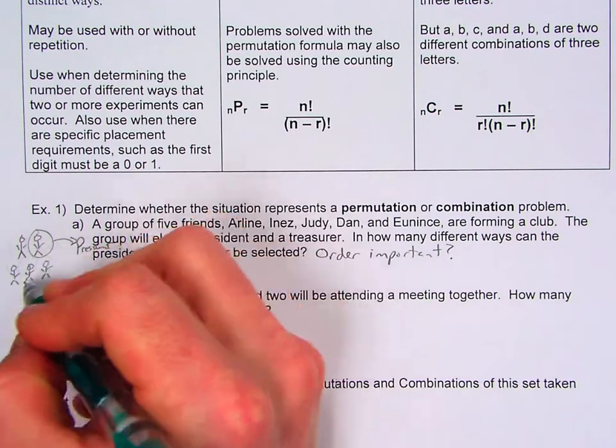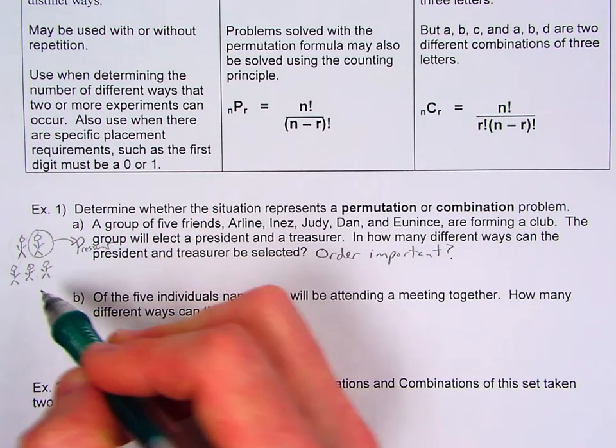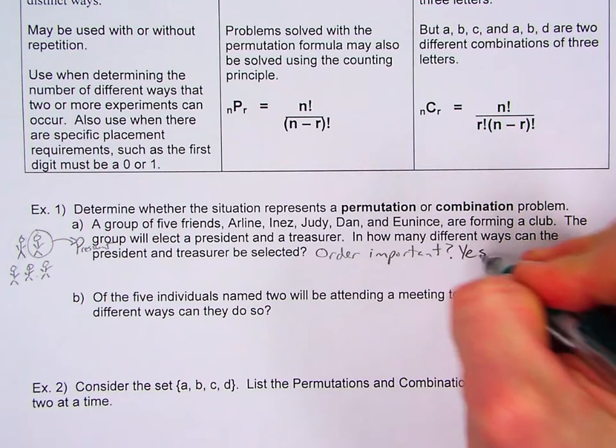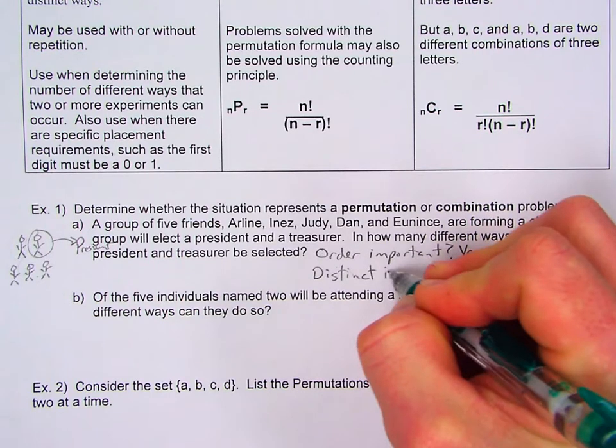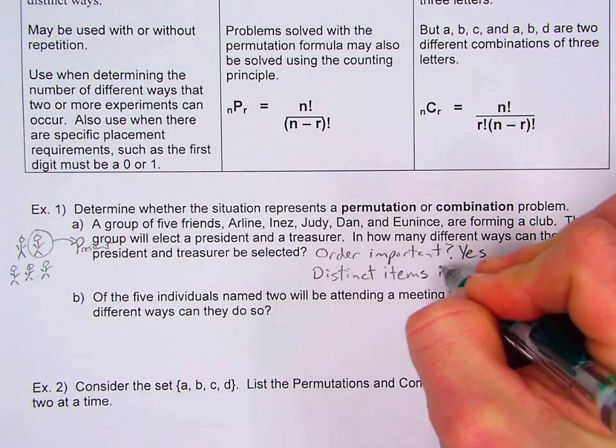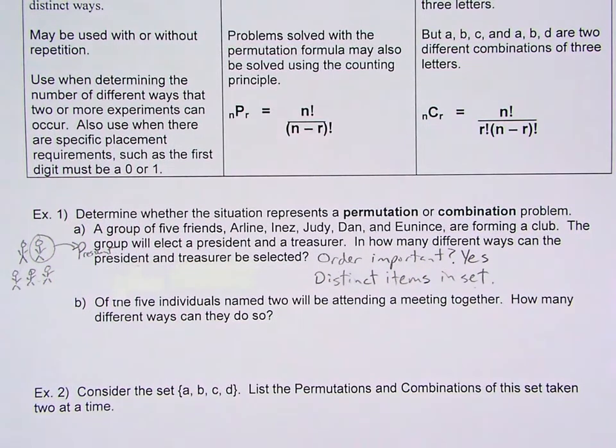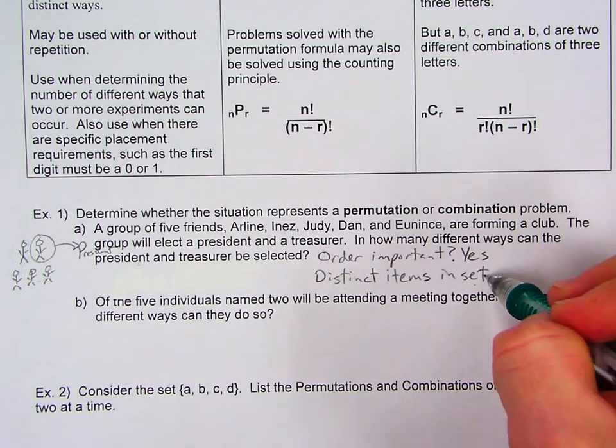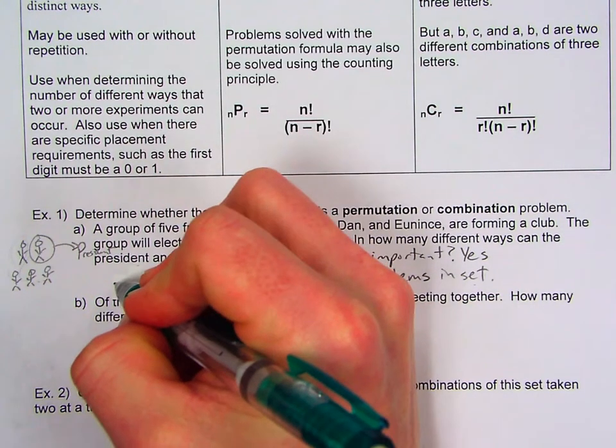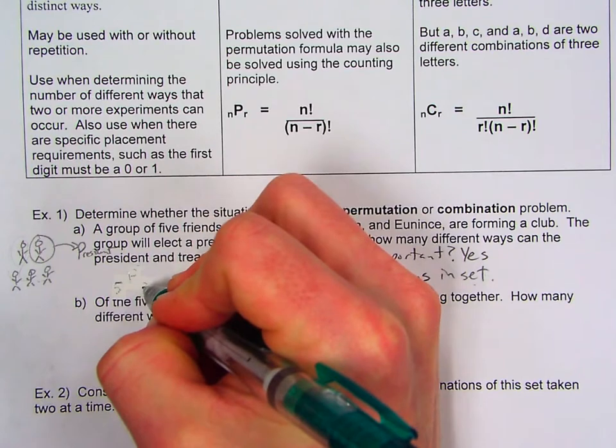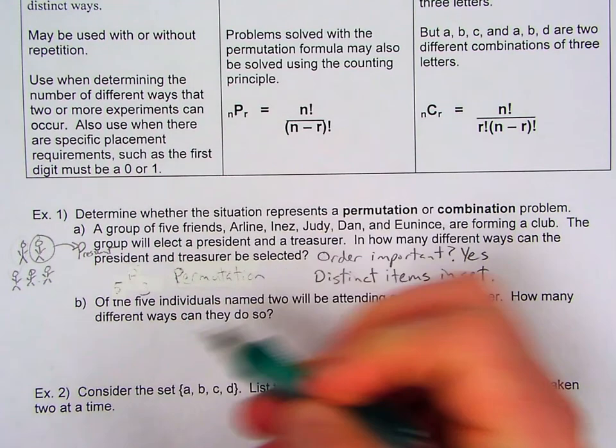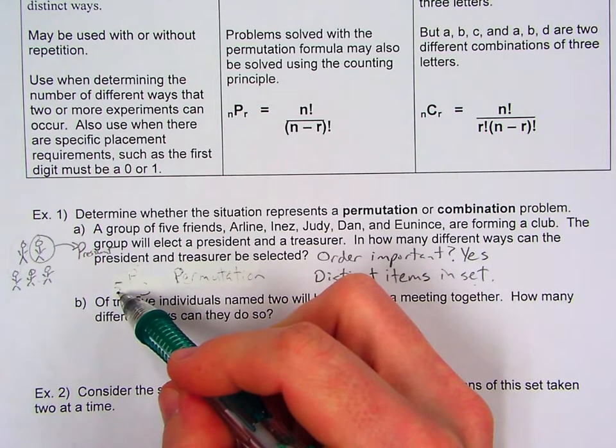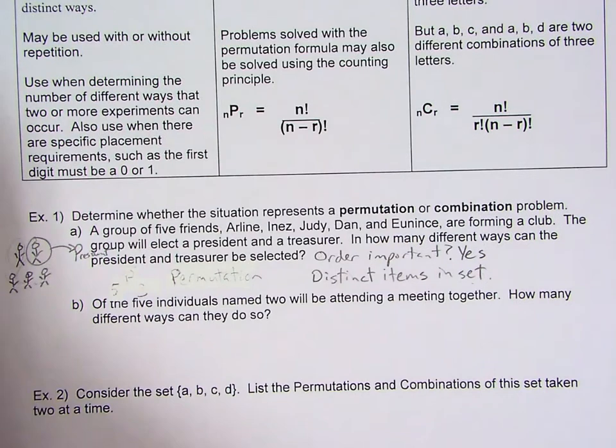So once the president is selected, now only treasurer is left. So the order that we choose this is important. Another thing to think about is all of these five individuals are different. So order is important, and then we have distinct items in the set. So because order is important, and we have distinct items in the set, this is actually a permutation. So this would be 5P3. So we're choosing out of five distinct objects, and we're choosing three of them at a time.